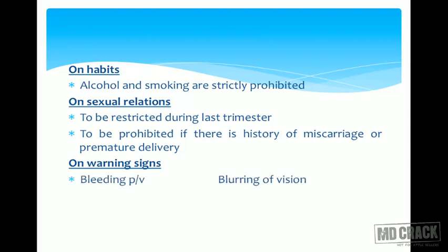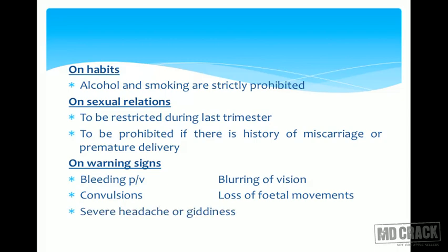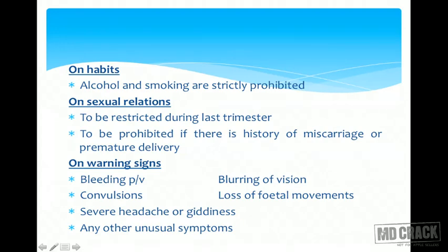Warning signs that patients should be informed about include: bleeding per vaginum, blurring of vision, convulsions, loss of fetal movements, severe headache or giddiness, and any other unusual symptoms. If any of these occur, the patient should immediately report to a health facility. Blurring of vision is a sign of preeclampsia; loss of fetal movements may indicate IUGR, fetal distress, or fetal death; convulsions indicate eclampsia; severe headache and giddiness indicate PIH.